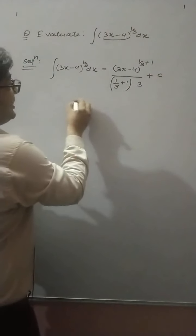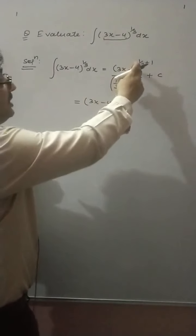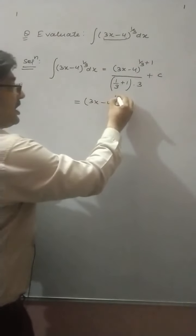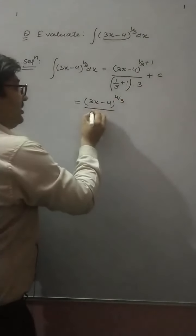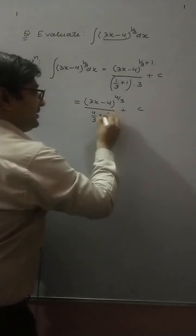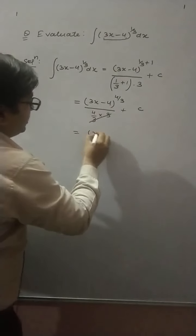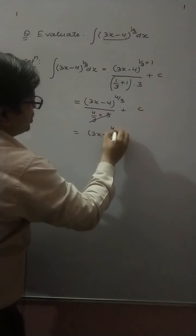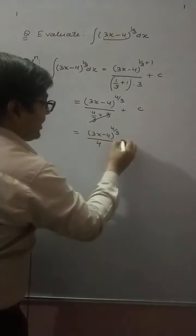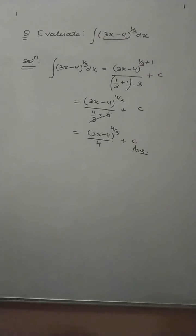Simplifying, you get (3x minus 4) raised to power 4 by 3, divided by 4 by 3 into 3, plus C. The 3s cancel out, so you get (3x minus 4) raised to power 4 by 3 divided by 4, plus C, which is the required result.